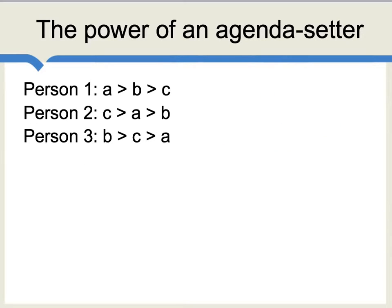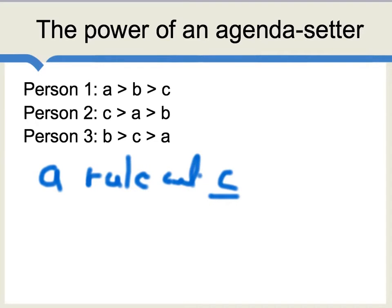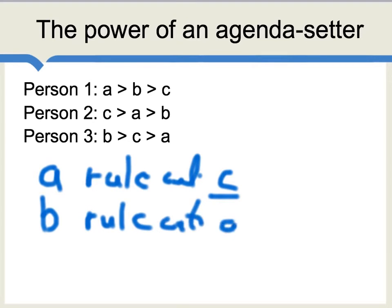Let's go back to those same multi-dimensional preferences and imagine how an agenda-setter might take on a significant degree of power. Let's say that the agenda-setter has the power to say: of these three options, we're only going to vote on two of them — I won't let one of the options even get to the floor of Congress or Parliament. If the agenda-setter has a personal preference in favor of A, they would simply rule out option C, and with C ruled out, you have a vote of A against B, and A would win. Or if the agenda-setter's personal favorite is option B, they would rule out option A, and when we vote B against C, B beats C 2 to 1, and B would win.